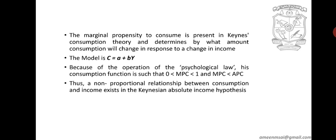So we measure MPC as change in consumption divided by change in income, that is one thousand divided by five thousand. For average propensity to consume, if your income is fifteen thousand and your consumption is four thousand, APC equals consumption divided by income — that is four thousand divided by fifteen thousand. So in Keynes' absolute income hypothesis, MPC is less than APC, pointing to a non-proportional relationship between consumption and income.